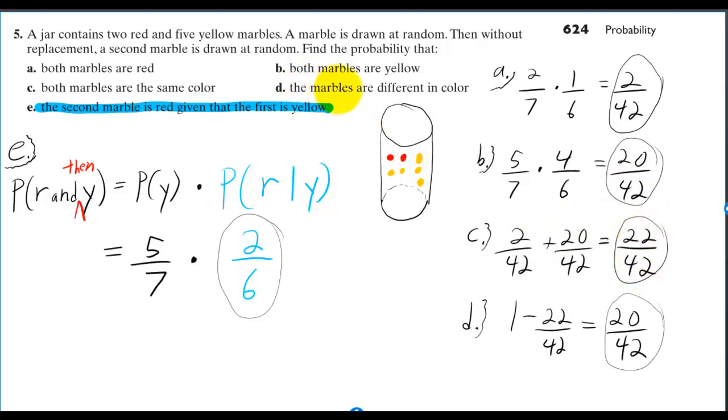Then the probability that the marbles are different in color is the same as the probability that both marbles are not the same color. And the formula for the probability of something not happening is you subtract from one. So the probability that they're not the same color is one minus the probability that they are the same color, which is 20 out of 42.